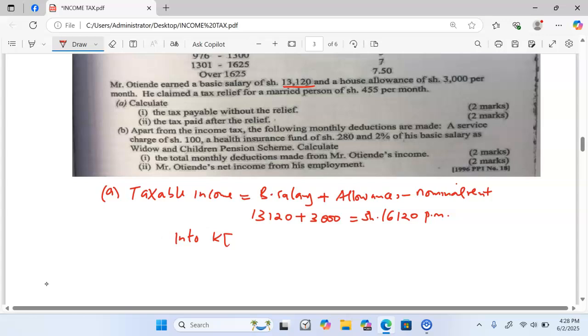Into Kenyan Pounds, we simply take 16,120, we divide by 20. And this one is going to give us Kenyan Pounds 806. That is our taxable income in Kenyan Pounds per month.